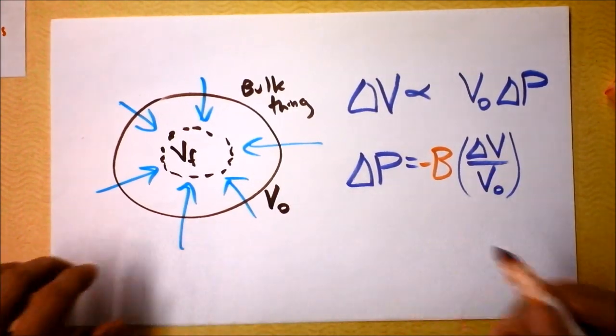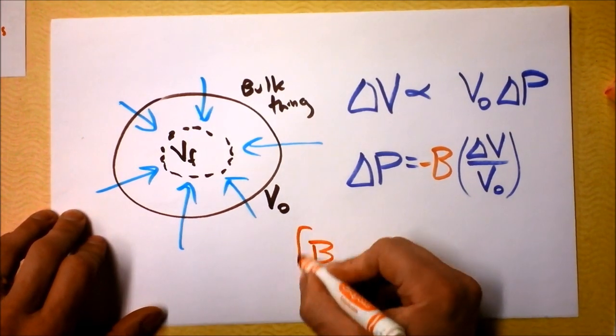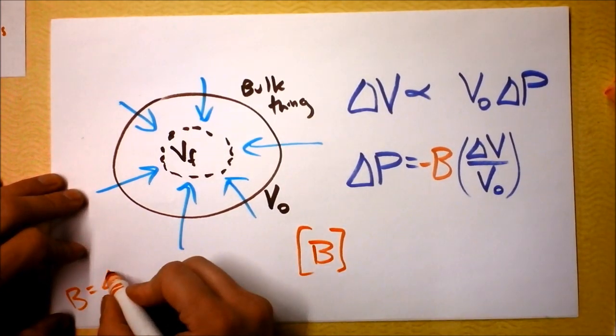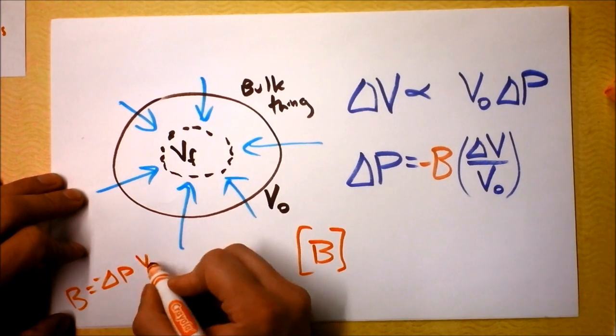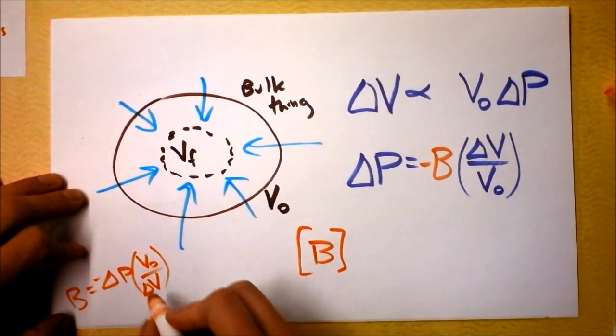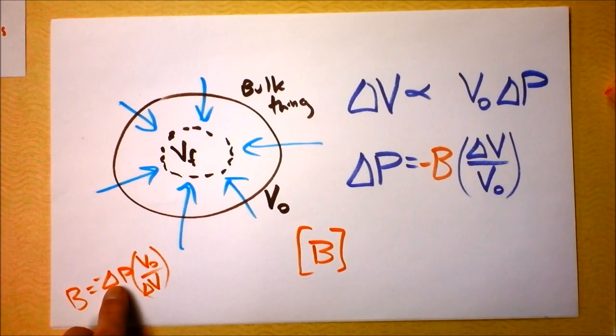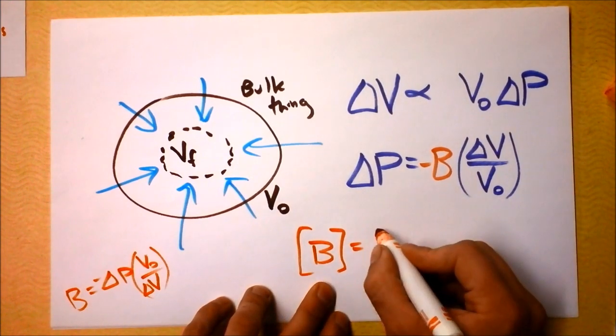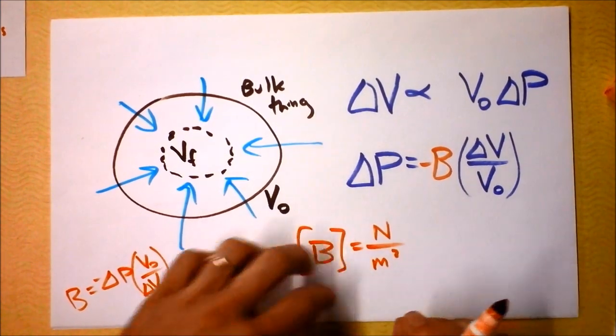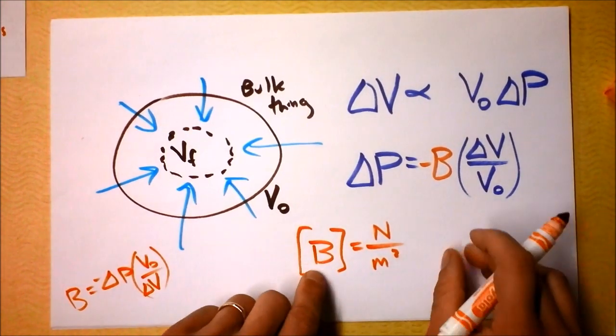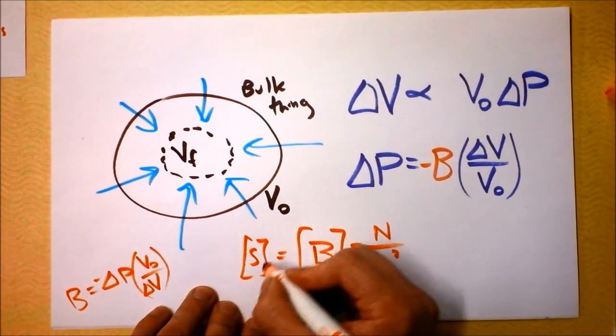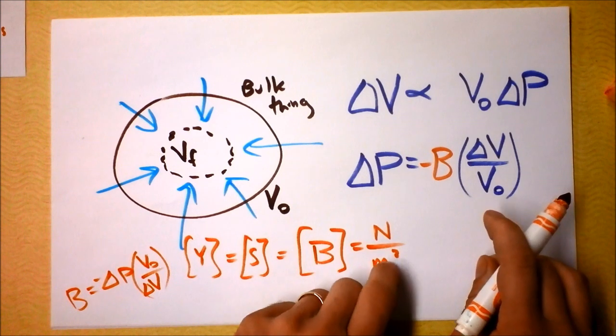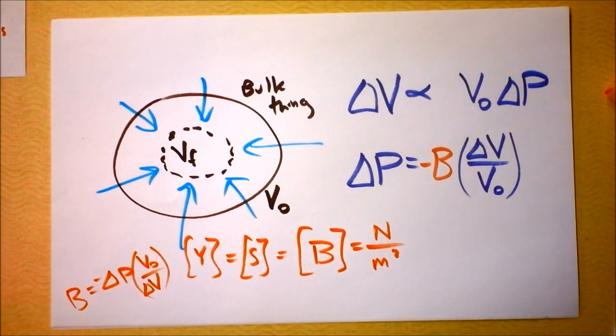The units of this B thing, the units of B, I find B to be delta P with a minus sign in front of it, and then V naught over delta V. That stuff right there has no units at all. Delta P, change in pressure. Pressure is force divided by area. This has no units at all. The units of bulk modulus are also newtons per square meter. So we've got units of shear modulus that are newtons per square meter, and we've got units of Young's modulus, that was changing the length of a thing, that are newtons per square meter. The units of all these things are the same. They're pressure units. That's really cute.